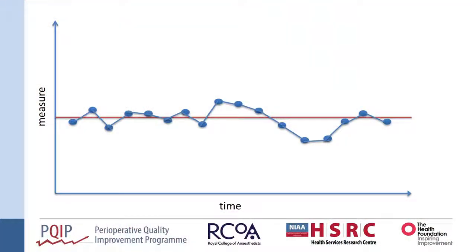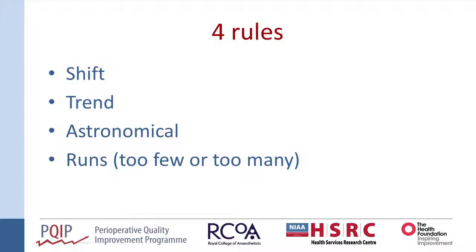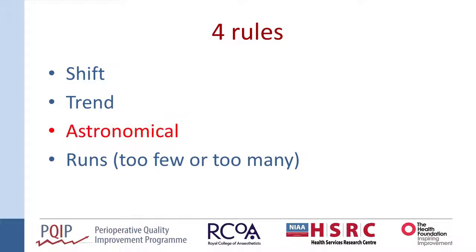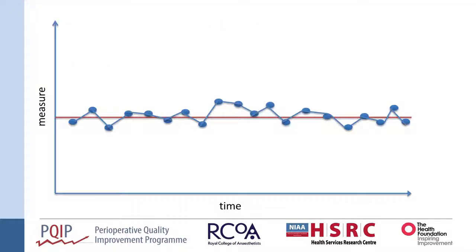The second rule is a Trend. This is when your data points are consecutively going upwards or consecutively going downwards. It doesn't matter if they cross or don't cross the median line — this is an indication of something non-random going on. Here we can see a downward trend, and the magic number is five: if you have five data points consecutively going upwards or downwards, that is a trend. For a shift you need six points; for a trend you need five.